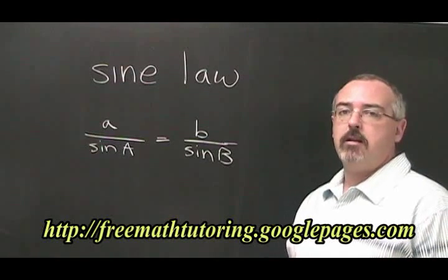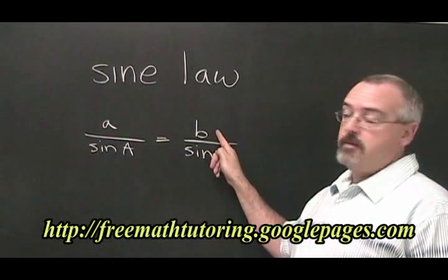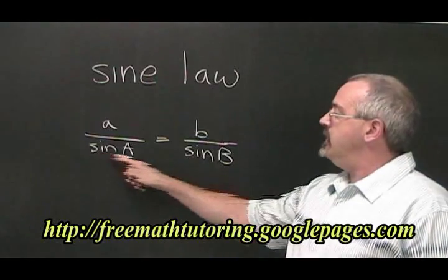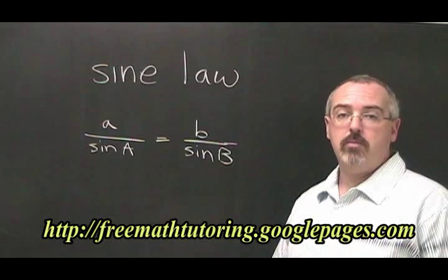The formula for sine law looks like this. A and b are both sides. Sine A and sine B are both angles. Notice that only sine is involved. You never use the cos button or the tan button when you use sine law.